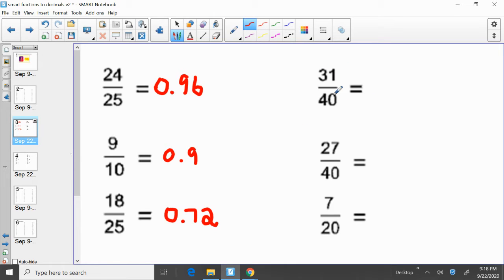Moving to the right-hand column, thirty-one fortieths, or thirty-one over forty. Thirty-one divided by forty equals zero point seven seven five. And then we go to our next one.